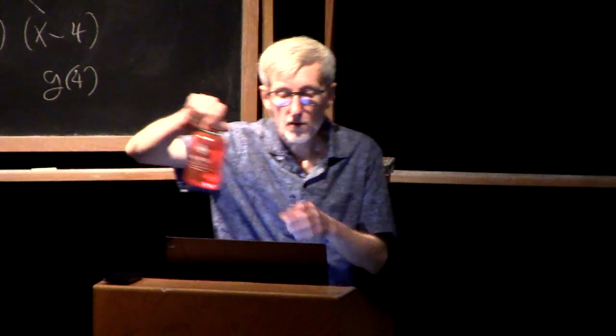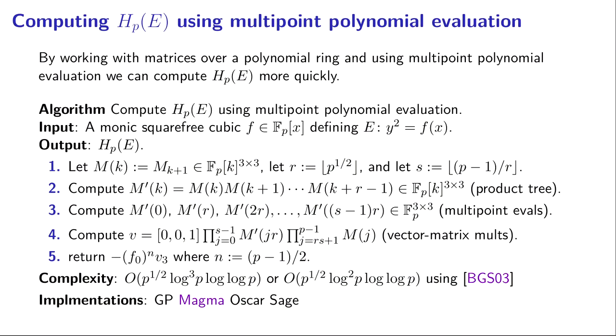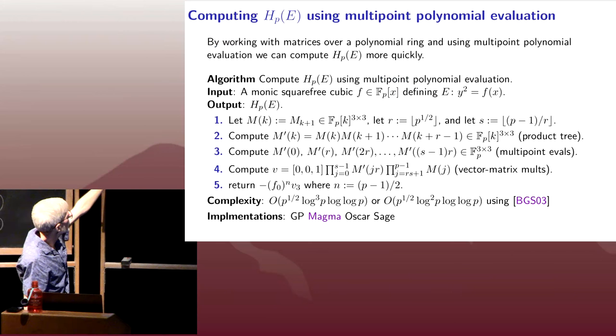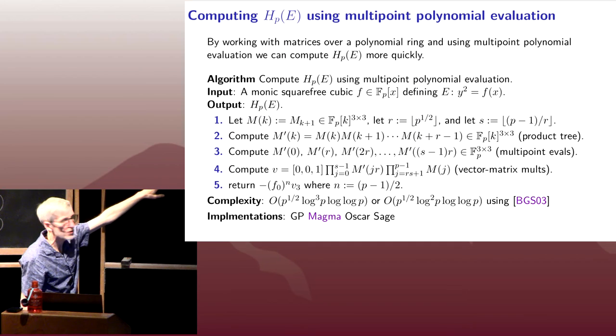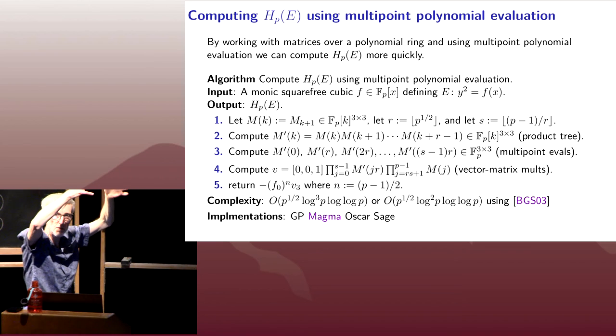And so this gives us an algorithm for computing the Haas invariant using multipoint evaluation. So this is just a different strategy. Rather than computing vector matrix multiplications, we're going to compute the product of these p minus 1 matrices all at once, and we're going to do it in two stages. We're first going to convert our m sub k into an m parentheses k that we're thinking of as a matrix over a polynomial ring, and I've written m of k is m sub k plus 1 so that I'm shifting to zero indexing here. I set r and s to be roughly on the order of the square root of p. And then we're going to compute the polynomial m prime of k as the product of all of these matrices whose entries are linear polynomials using a product tree. Same sort of product tree as here, but now they're matrices with polynomial entries, and we're multiplying them up until we get a single matrix at the top.